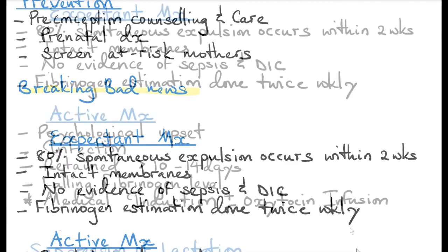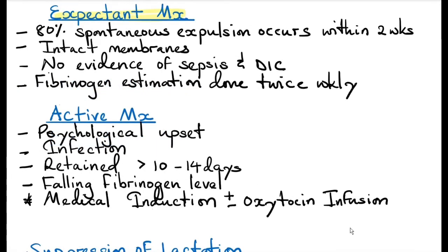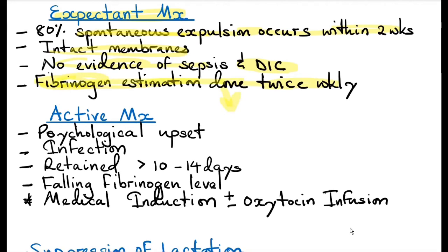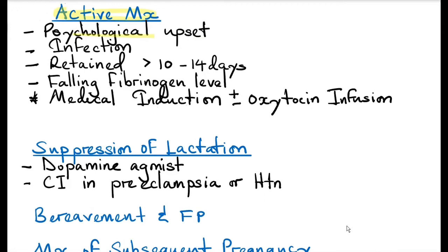Breaking bad news is never easy — listen to the patient and her family and answer their concerns professionally. Conservative management: in about 80 percent of cases, spontaneous expulsion occurs within two weeks. This is appropriate if there are intact membranes, no evidence of sepsis, and no evidence of disseminated intravascular coagulation. Collect blood for fibrinogen estimation twice weekly; if fibrinogen levels fall below normal, this indicates DIC is setting in.